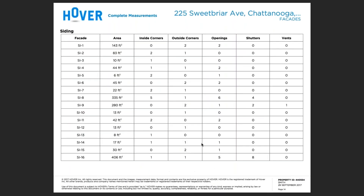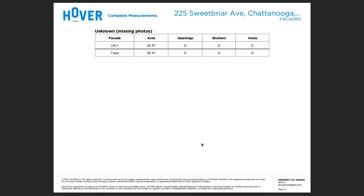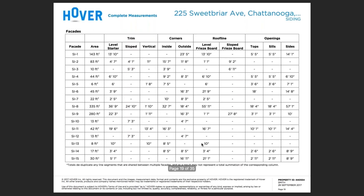The facade tables will break down each individual wall area and give you a greater level of detail. Here you're finding all of the siding areas of the structure on page two of the siding area. We then move on to the brick facade report, which will provide each individual brick wall section, the area, the openings, shutters, and vents. Finally, we'll provide the unknown facades in a table as well, giving you the square footage of the area, the openings, shutters, and gable vents. The siding facade table will provide a greater level of detail by wall area in the event that you're doing a partial job or need to extract individual facades for different components.